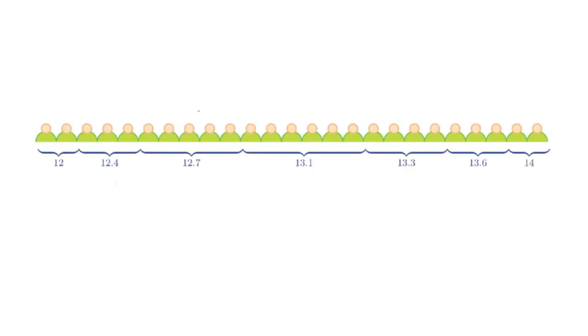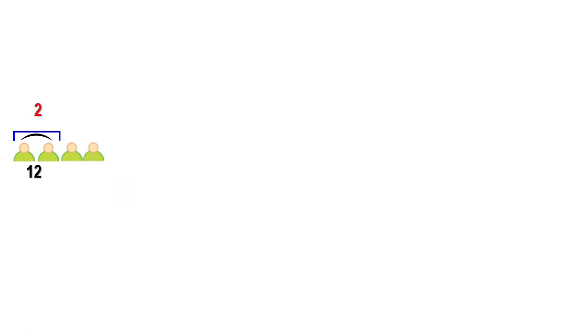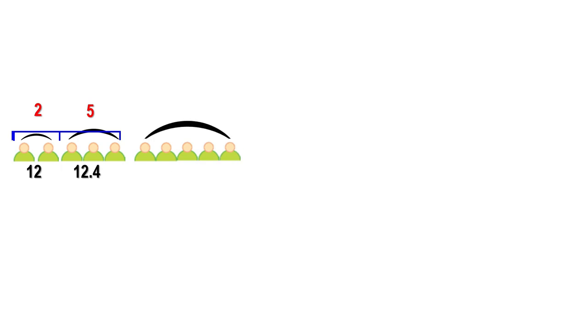Imagine the kids standing in a line in order of hemoglobin level. The first two have hemoglobin level 12. The next three have 12.4. The next five have 12.7, and the line grows. We want the hemoglobin level of the 13th kid. The first two children have level 12, the next three have 12.4 — so 2 plus 3 is 5, meaning the fifth kid has level 12.4. Adding five kids in the next group gives 10, and the level reaches 12.7, so the tenth kid is at level 12.7.